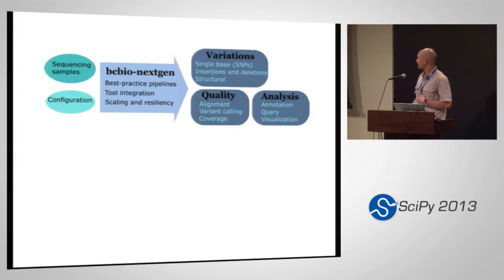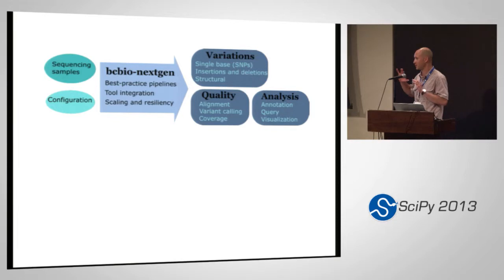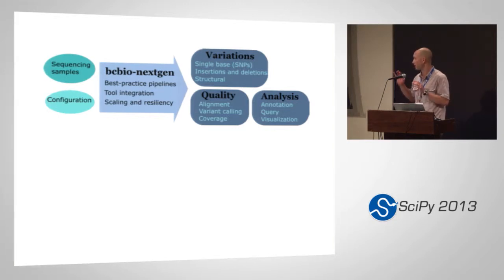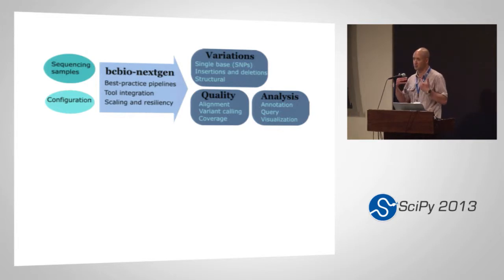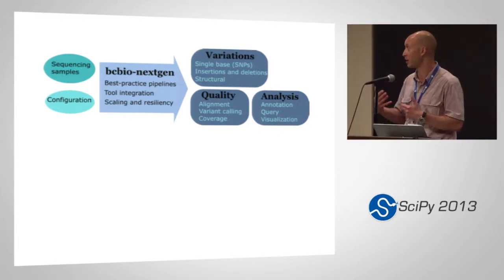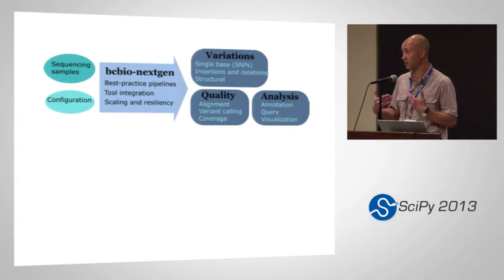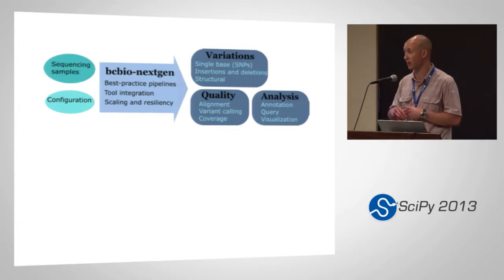This nice cartoon diagrams the overview of what this toolkit, which I call BCBio NextGen, provides. You start with sequencing data — next-generation high-throughput sequencing data. The most common thing we deal with is Illumina re-sequencing of human genomes and a configuration file that defines what you want to do. You feed that into the pipeline, and what it does is provide best practice pipelines for analysis, integrating a ton of different tools that are complicated to work together. It also provides scaling and resiliency to errors, restarts, and all that.